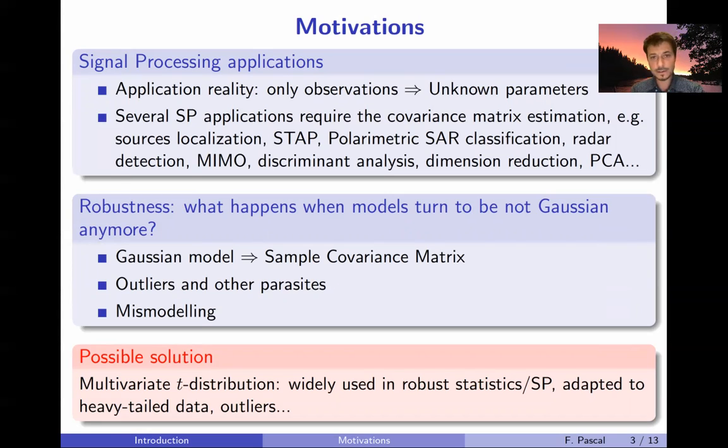So let's talk now about robustness. Even though we assume quite often that the data or the underlying model is Gaussian, of course it's not always the case. It's not the case when the data contains outliers or other parasites and also when assuming this Gaussian model you can have mismodeling.